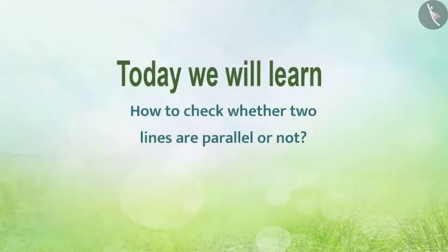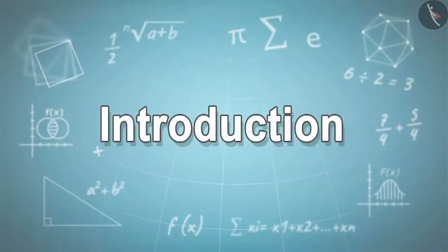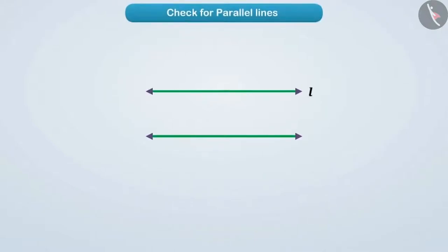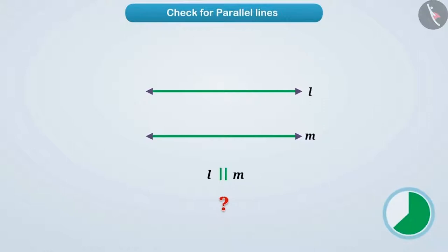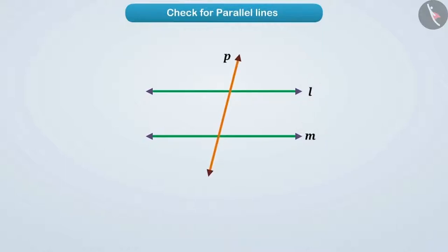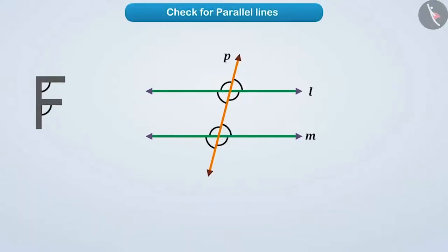Today we will learn how to check whether two lines are parallel or not. Suppose we are given two lines, line L and line M. Are these two lines parallel? Let us draw a transverse line P which intersects line L and line M. These different angles constructed by the line P are as follows.